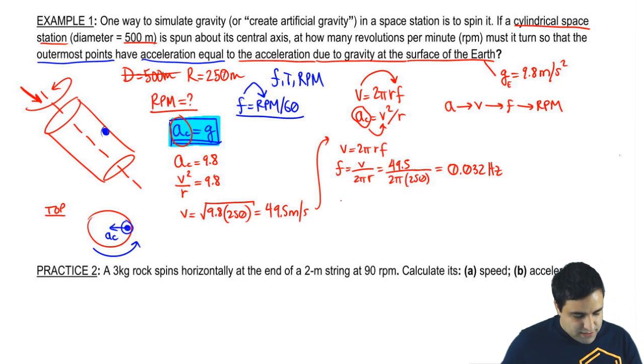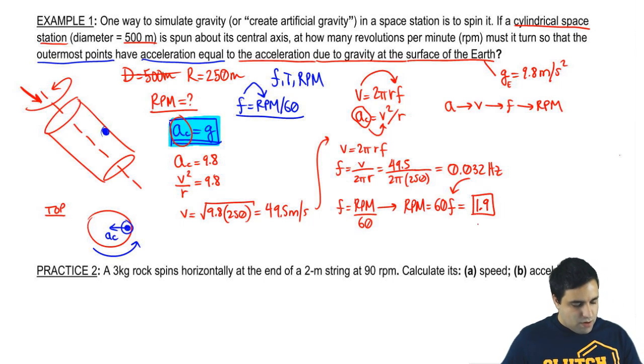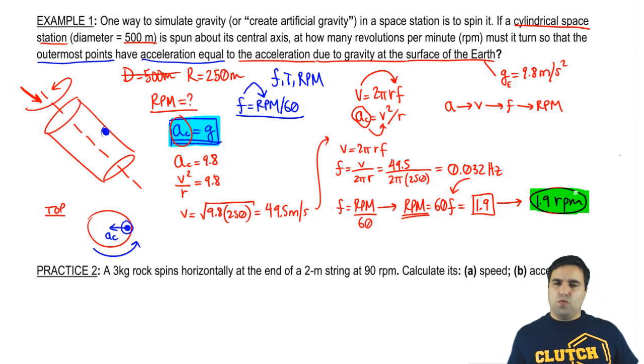Lastly, there's the equation that says frequency is RPM over 60, but I want RPM, so RPM is just going to be 60F. Here's my F. Once you multiply this, it rounds up to about 1.9 RPMs. This means that you need 1.9 RPM. So if this thing rotates at a rate of almost twice per minute, it's going to create a simulated gravity of 9.8. So that's how that works.